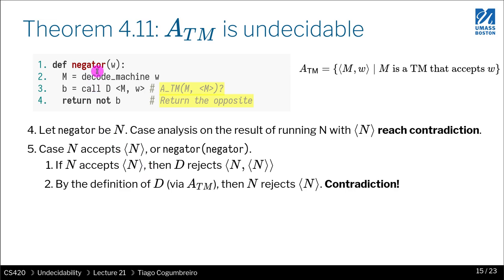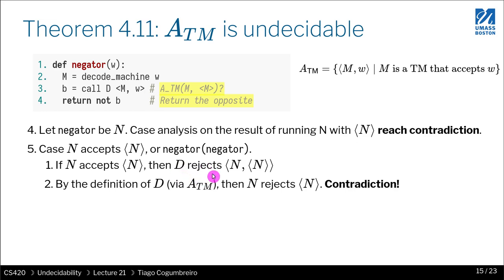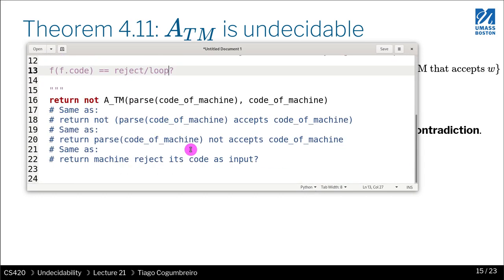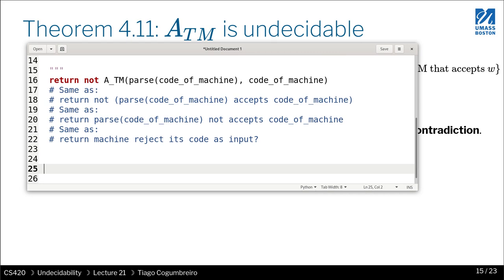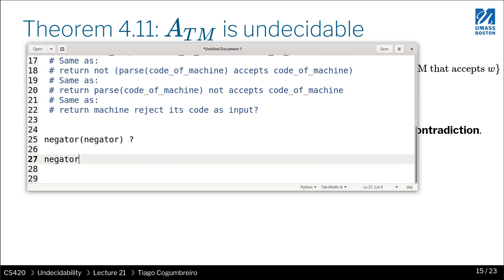So what could happen? Well, if N accepts the code, then that means that this whole thing returned accept, which means that N rejected the decider, so let's go through. So if N accepts N, that means that D rejects N pass N. So why is that? Let's see. We see that the negator accepts. Right. So we want to know what is the negator of negator. So we say, okay, negator, we're doing a case analysis. Negator is accept.